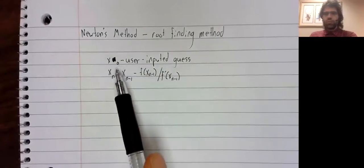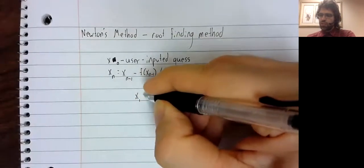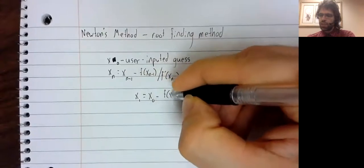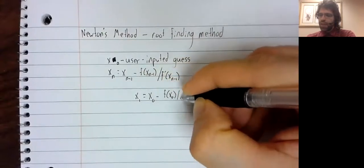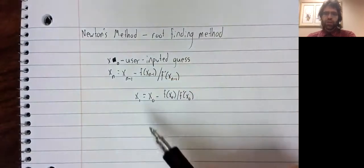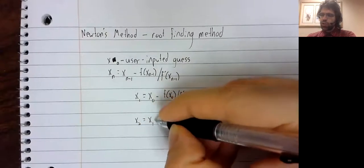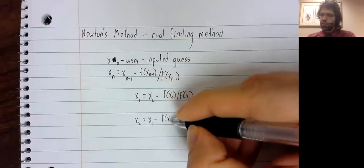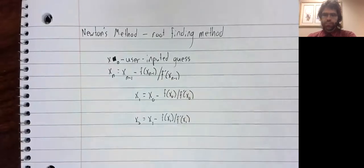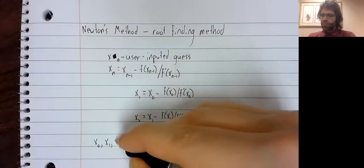So the user decides what x sub zero should be. Once we've decided what x sub zero should be, we can calculate x sub one. Once we've calculated x sub one, we can calculate x sub two, and so on. And we get a list of numbers.